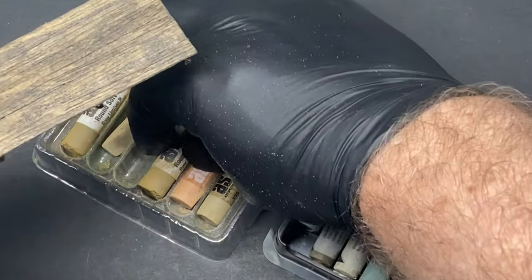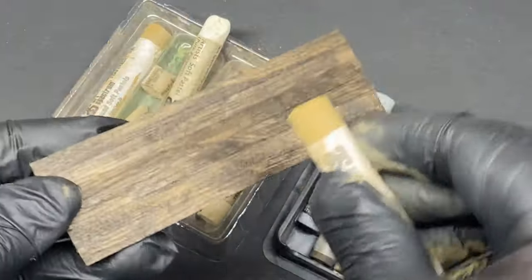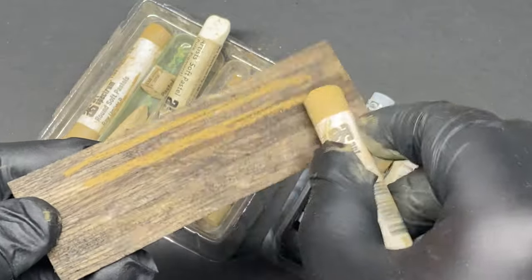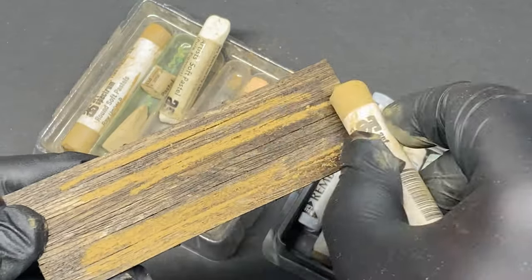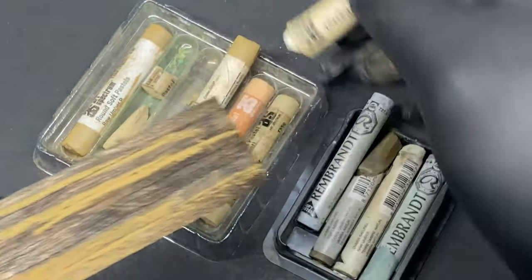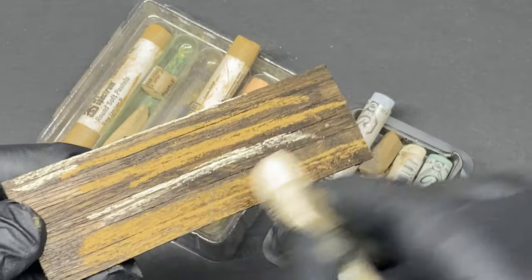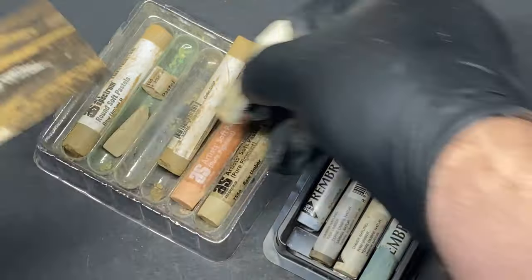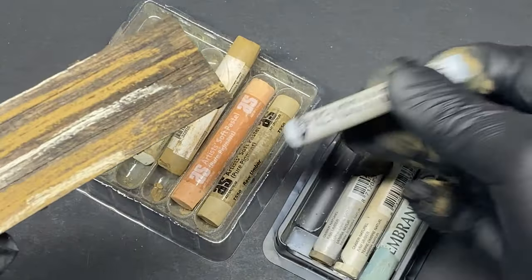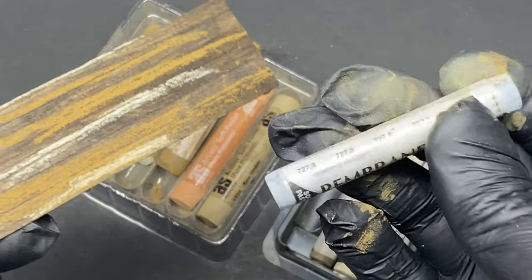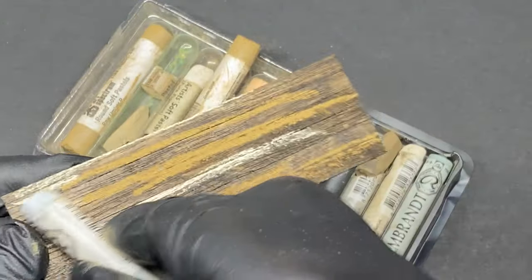The next step is to start building up the color with the soft pastels. Working directly onto the timber, draw on patches of pastel colors. Don't overthink it and try and keep it random. You can always repeat this step and add more layers later on if desired.